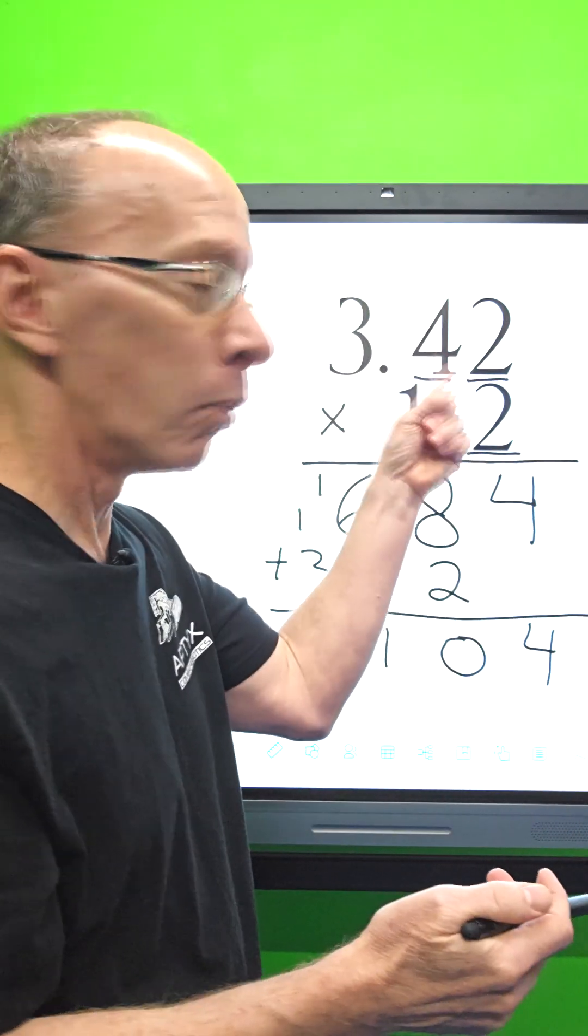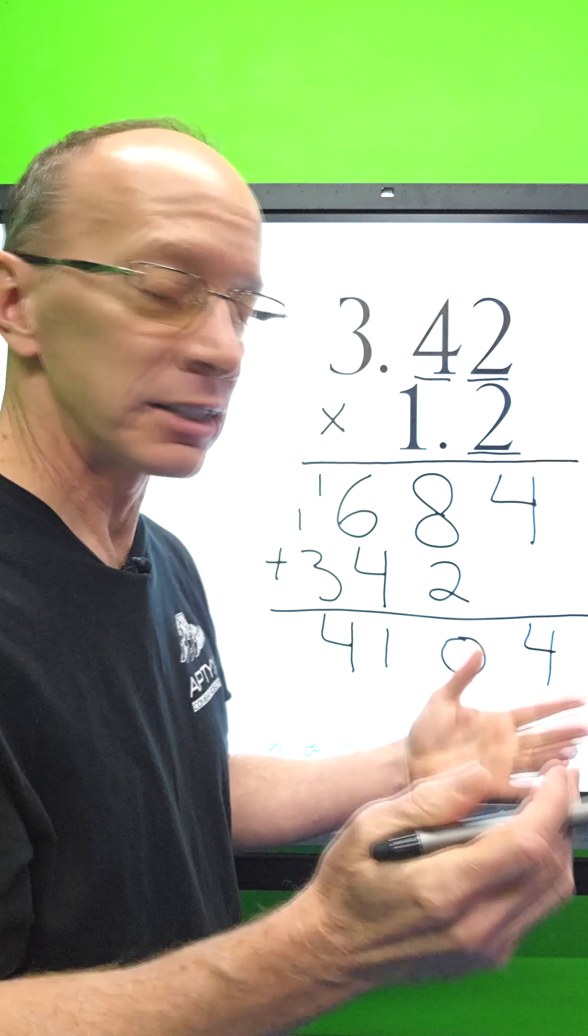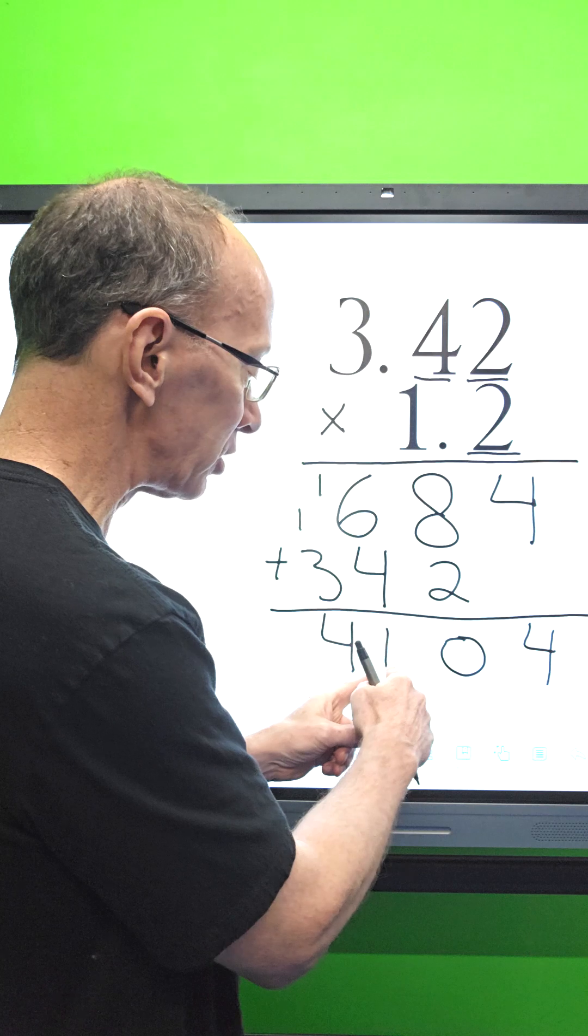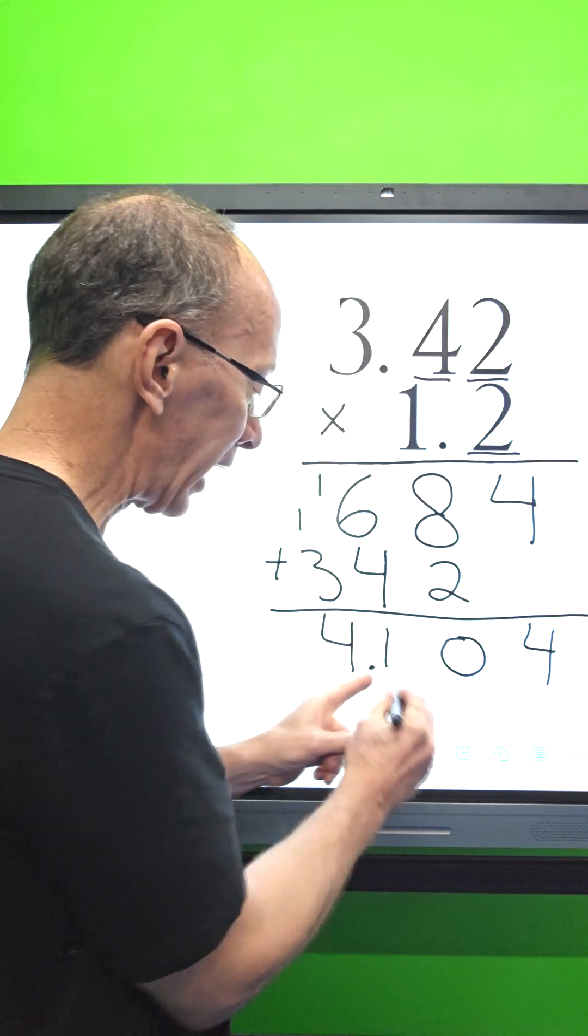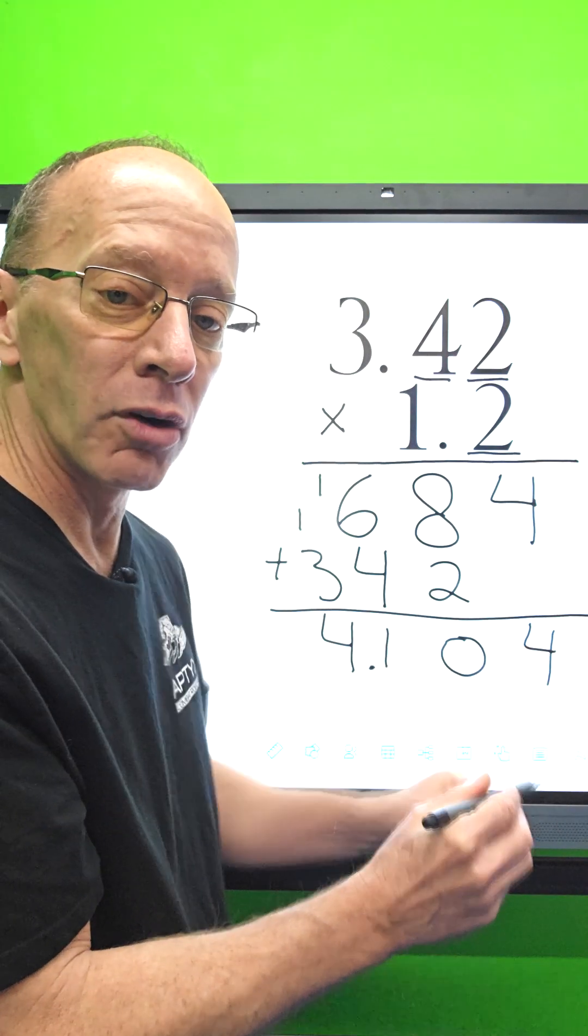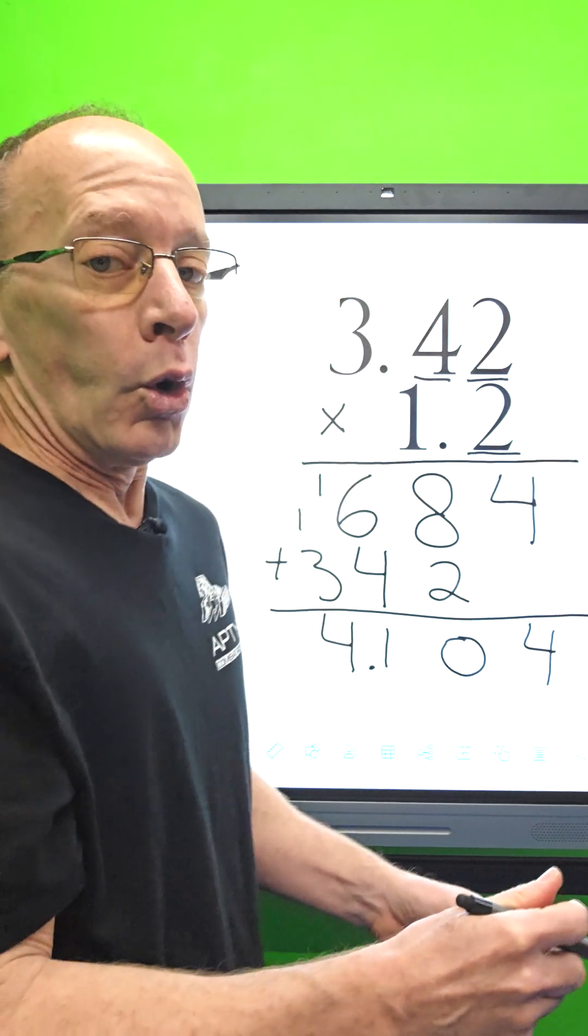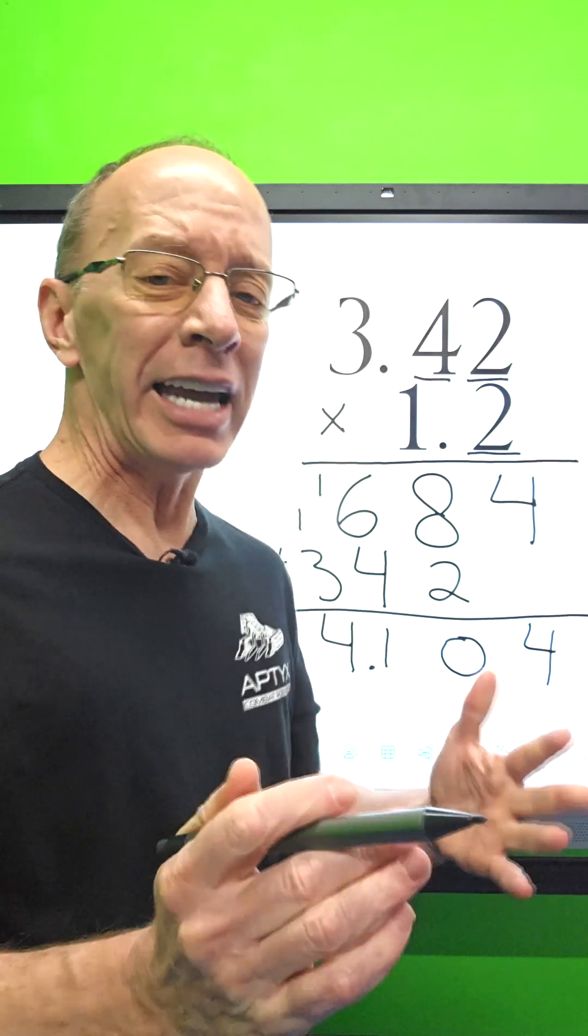So then count up all the numbers that you underline. So I got one, two, three, three. So I'm gonna have the decimal on this side behind three numbers, so I put it right here. I got one, two, three numbers over on that side. That's the answer. The answer is four point one zero four. Now wasn't that easy?